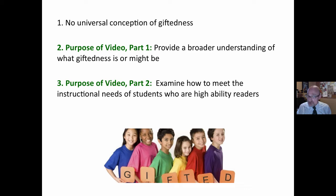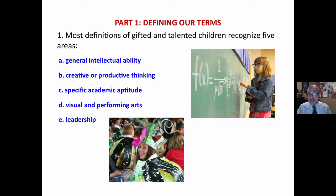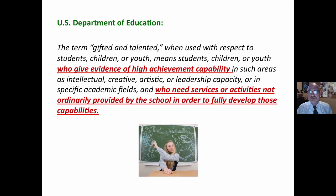First of all, let us define our terms. Most definitions of gifted and talented children recognize students in pre-K through 12 and recognize five areas — much more than just the smart kids: general intellectual ability, creative or productive thinking, specific academic aptitude, visual and performing arts, and leadership. We will unpack those terms in just a minute.